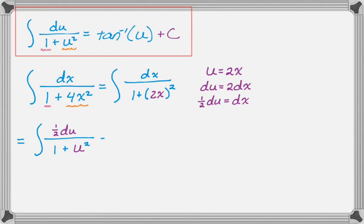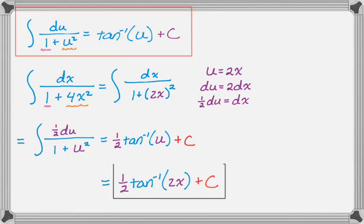So that 1 half just gets pulled out. And then it's exactly arctan, right, du over 1 plus u squared. So that's going to be the arctan of u. And then, don't forget, plus c. And then we go back to the original variable, which was x. So we make our substitution: 1 half arctan of 2x plus c.